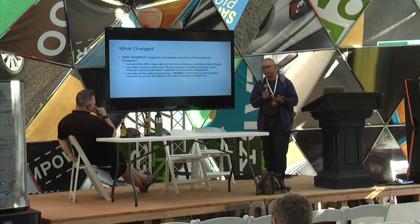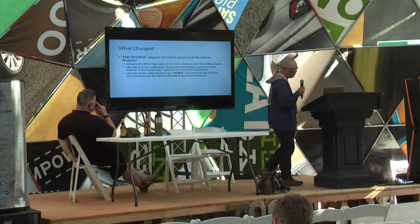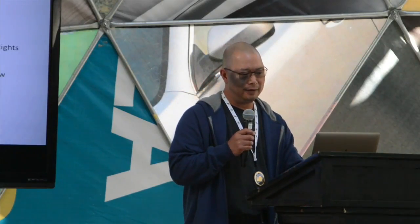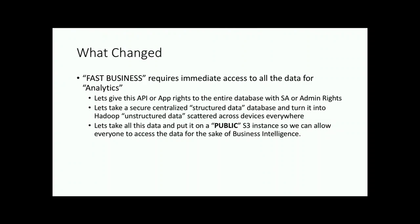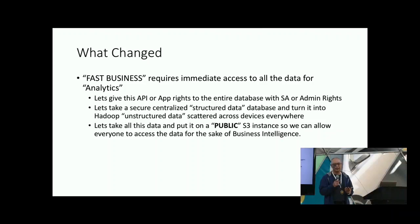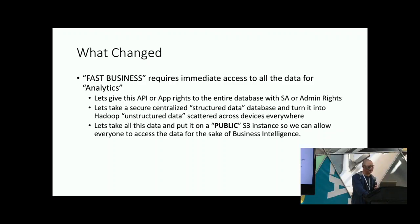Given the fact that we've moved to the fast business model, it requires that we have all the things. Let's have all the data, all the time, everywhere — we don't care what it is. That's why the GDPR thing is going to have to change things for people, because you can't put that type of data anywhere and not know where it is. Why don't we go ahead and give an API rights to the entire database? Yeah, that's happened. That's a breach.